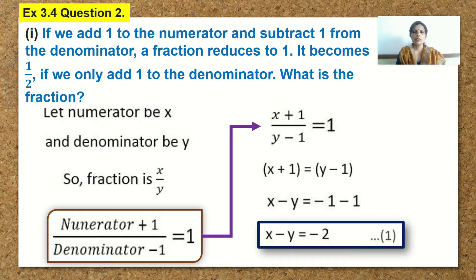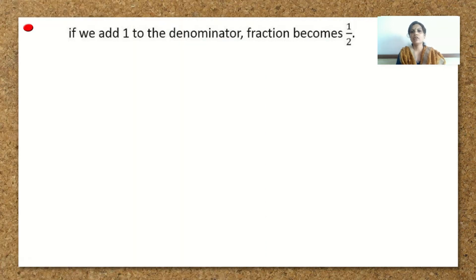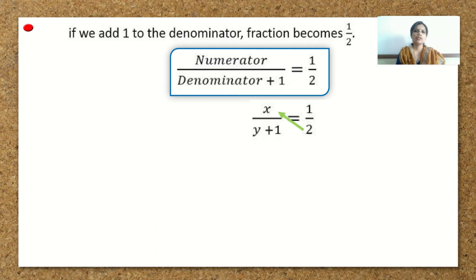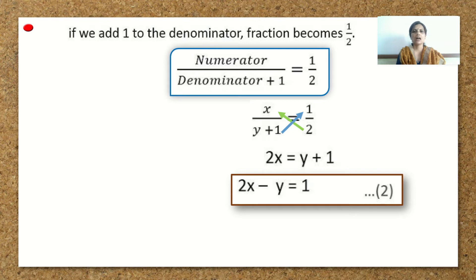In the second part of the sum, the fraction becomes 1 by 2 if we add 1 only to the denominator, without changing the numerator. So we have x upon y plus 1 is equal to 1 by 2. Cross multiplying gives 2x equal to y plus 1. Arranging in standard form, we get 2x minus y is equal to 1, and this is our second equation.